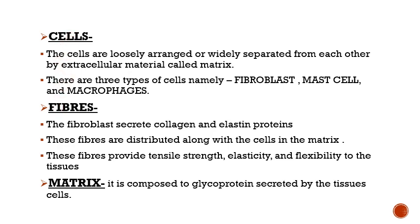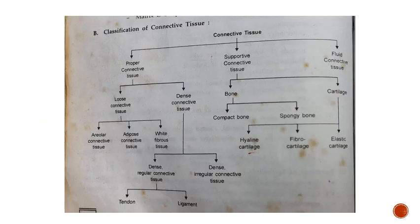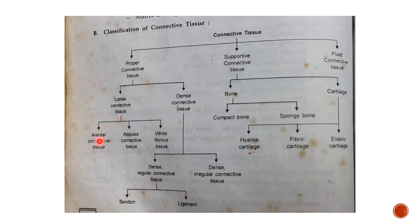Connective tissue is divided into three parts: proper connective tissue, supportive connective tissue, and fluid connective tissue. Under proper connective tissue we have loose connective tissue and dense connective tissue. Under loose connective tissue we study areolar connective tissue, adipose connective tissue, and white fibrous connective tissue. Under dense connective tissue we study dense regular connective tissue — that is tendon and ligament — and dense irregular connective tissue, depending upon the arrangement of the fibers.